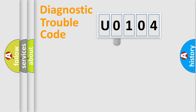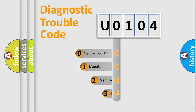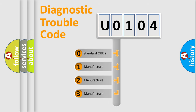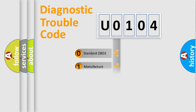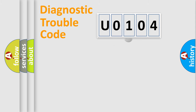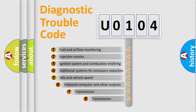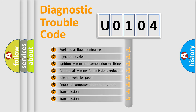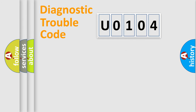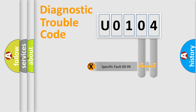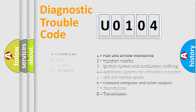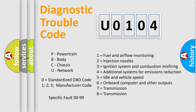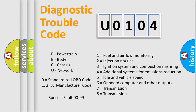This distribution is defined in the first character of the code. If the second character is expressed as zero, it is a standardized error. In the case of numbers 1, 2, or 3, it is a more specific car-specific error expression. The third character specifies a subset of errors. The distribution shown is valid only for the standardized DTC code. Only the last two characters define the specific fault of the group. This division is valid only if the second character code is expressed by the number zero.